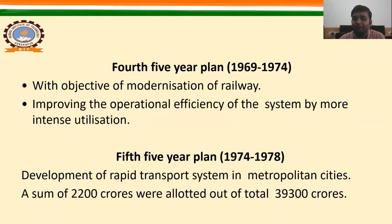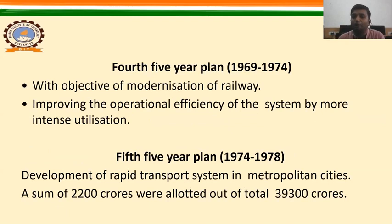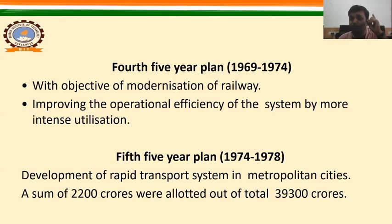The fourth five-year plan (1969–1974) had the major objective of modernization of railways and improving operational efficiency through more intense utilization. The fifth five-year plan (1974–1978) focused on development of rapid transport systems in metropolitan cities, with a sum of 2,200 crores allotted out of a total of 39,300 crores — showing significant growth from the 257 crores of the first five-year plan.